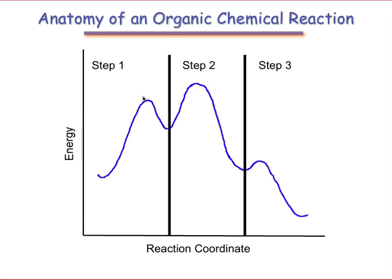Each peak is a high-energy species known as a transition state, and each valley is a starting material, intermediate, or product. The progression from an energy valley through a single transition state and into a second valley is known as an elementary step.